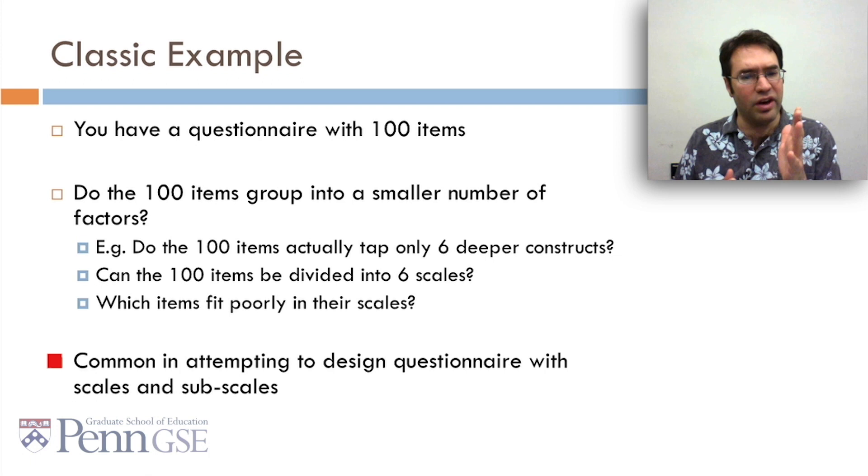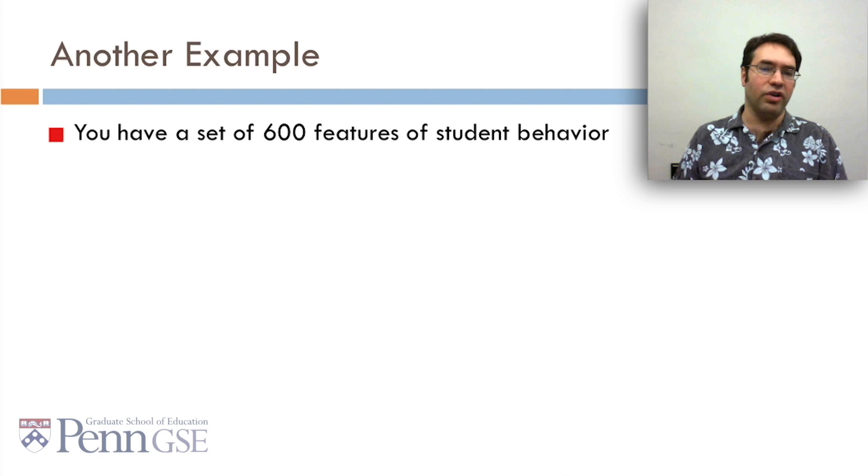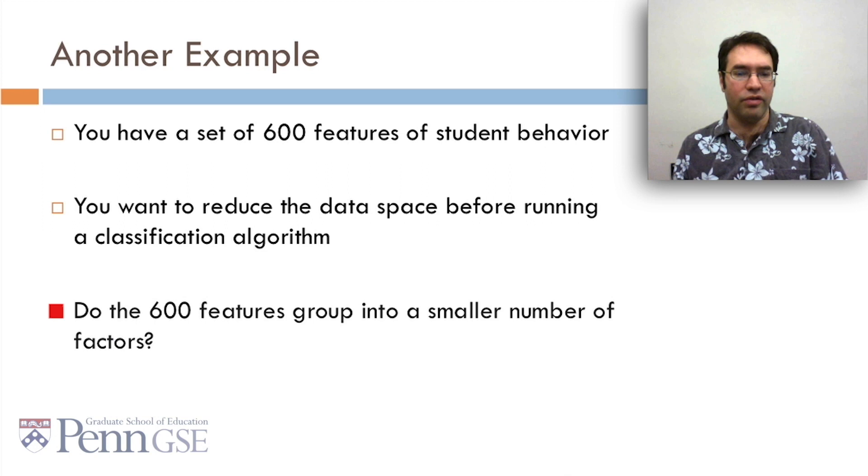Another example, and one that shows the versatility of factor analysis is, let's say you have a set of 600 features of student behavior. And you want to reduce the data space before running a classification algorithm. You could do fast correlation based filtering, but here's an alternative. You say, do the 600 features group into a smaller number of factors? So, for example, the 600 features actually tap only 15 behavioral constructs in student behavior.